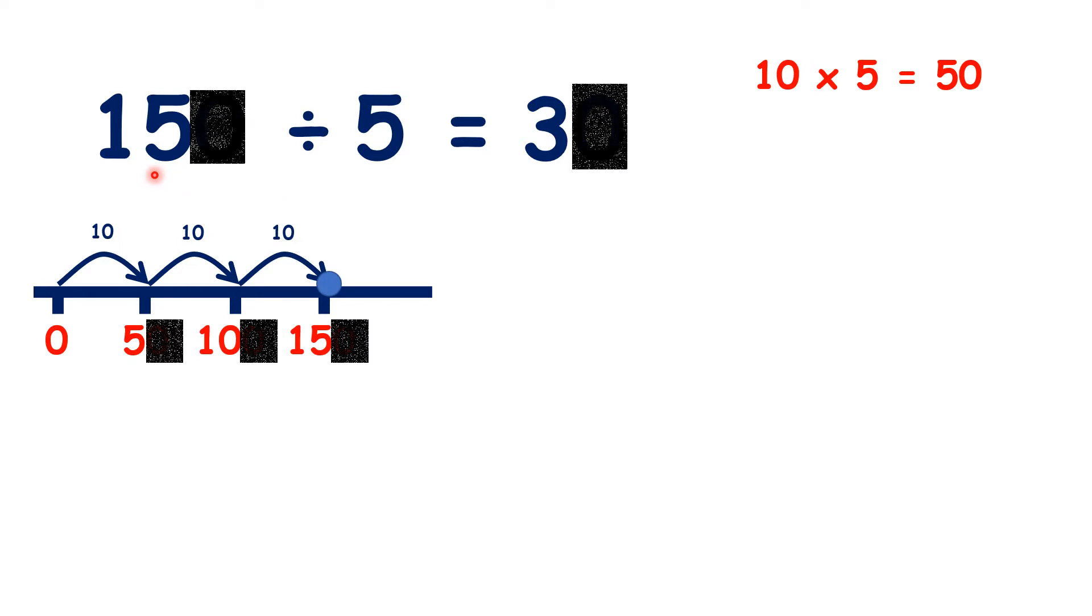And if we know that 15 divided by 5 is 3, we know that 15 tens, so 150, divided by 5 is 3 tens. So 150 divided by 5 is 30.